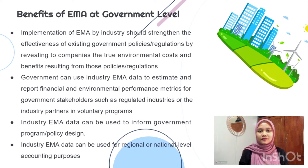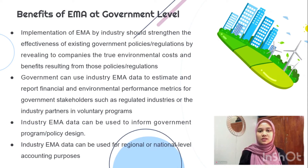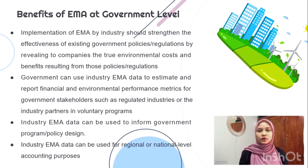At the government level, industry implementation of EMA could improve the efficiency of current government policies or regulations by exposing the true environmental costs and benefits of such policies to enterprises. The government can also use EMA data from industry to estimate and report financial and environmental performance metrics in voluntary programs for government stakeholders. Industry EMA data may also be used for regional or national accounting purposes and to inform government program or policy design.